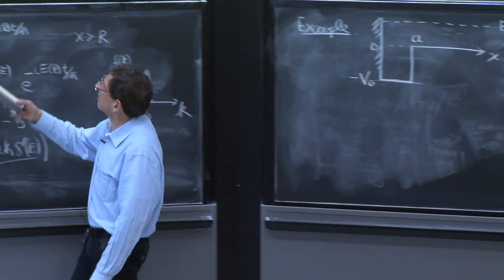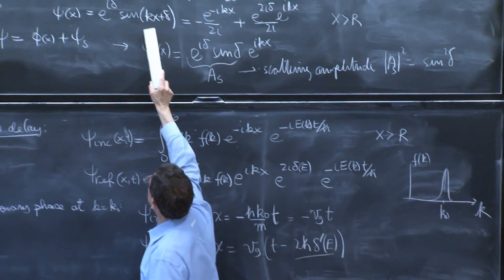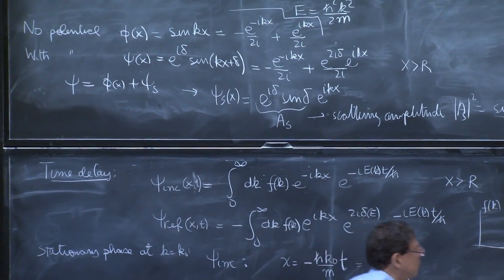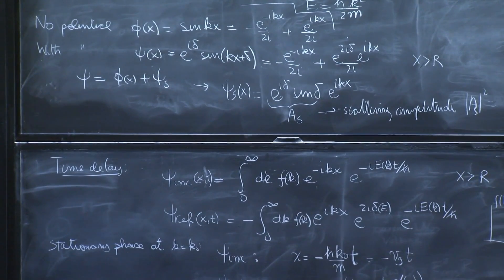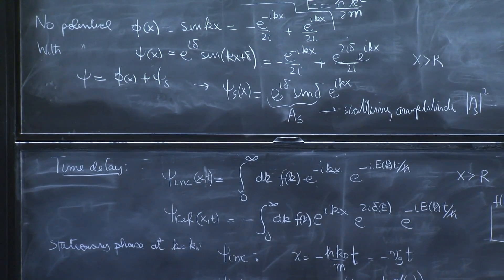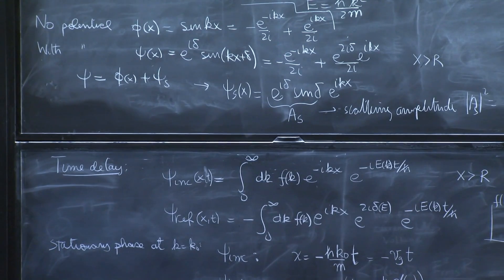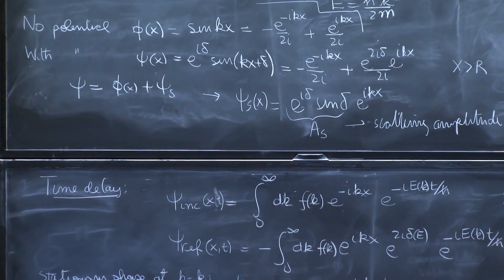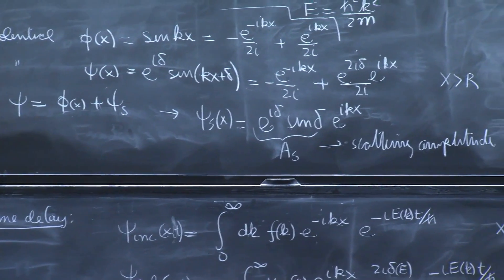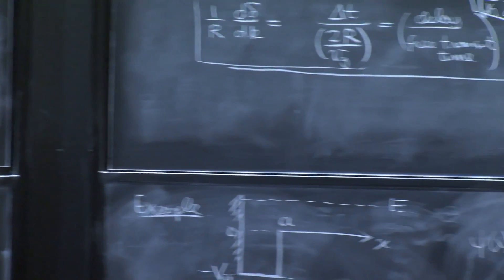I don't have to think. I just write this. e to the i delta. I don't know what delta is, but that's the answer. That's e to the i delta sine kx plus delta should be the solution for x greater than a.